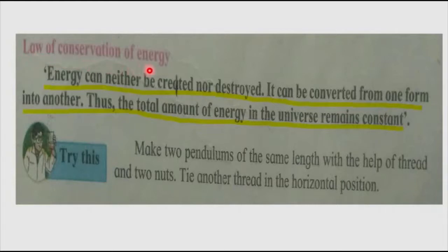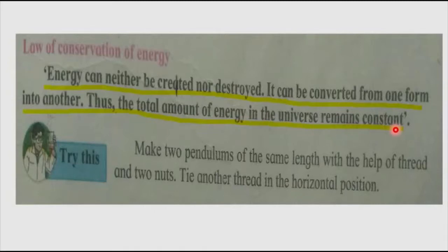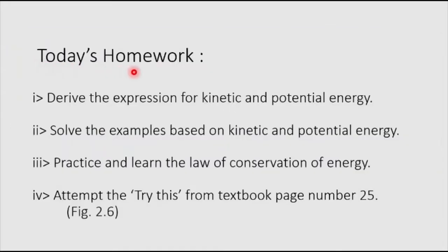Let's see the law of conservation of energy. The law states that energy can neither be created nor be destroyed; it can only be converted from one form into another. Thus, the total amount of energy in the universe is constant. This is a very important law. Today's homework: 1. Derive the expression for kinetic and potential energy. 2. Solve examples based on kinetic energy and potential energy. 3. Practice and learn the law of conservation of energy. 4. Attempt the activity from the textbook, page 25, figure 2.6.